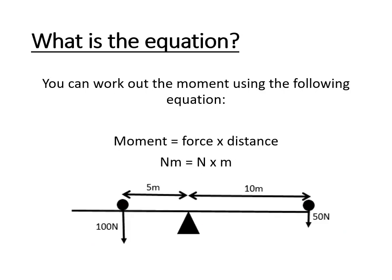The equation you need to know to work out the moment is: moment equals force times distance. So it's the force of the object multiplied by the distance from the pivot. In this example, the distance from the pivot is five metres on the left and ten metres on the right. The force on the left is 100 newtons and the force on the right is 50 newtons.